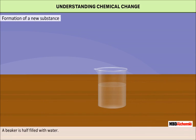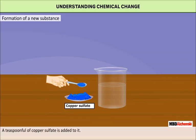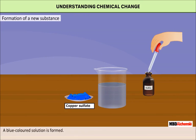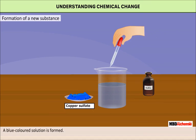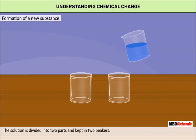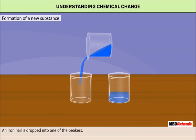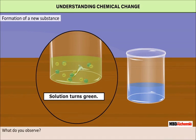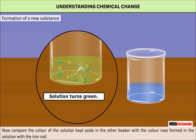A beaker is half filled with water. A teaspoon of copper sulphate is added to it, followed by a few drops of sulfuric acid (H₂SO₄). A blue colored solution is formed. The solution is divided into two parts, kept in two beakers. An iron nail is dropped into one of the beakers. Wait for half an hour and observe — compare the color of that solution with the one kept aside.